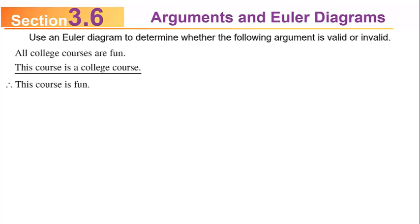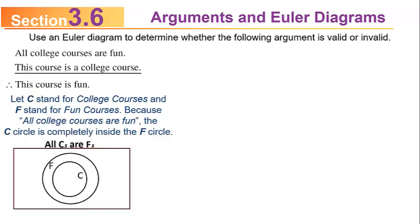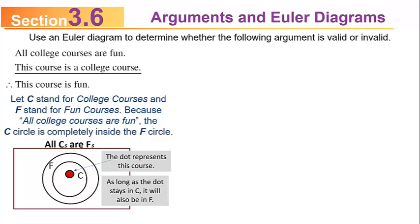Let's use Euler diagrams to help answer that question. If we let C stand for college courses and F stand for fun courses, because the first premise says all college courses are fun, the circle C is completely inside the circle F. As long as the dot stays inside the college courses circle C, it will also be inside the fun courses circle F. So 'this course is fun' is a valid argument.